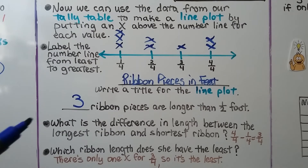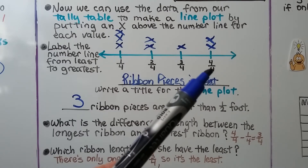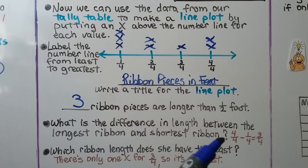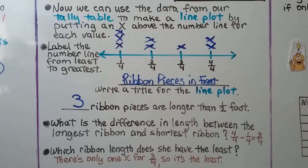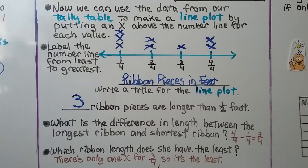What's the difference in length between the longest ribbon and the shortest ribbon? The longest ribbon is four-fourths and the shortest ribbon is one-fourth. The difference is the answer in subtraction, so four-fourths minus one-fourth. We have the same denominator, so we just subtract the numerator: four minus one equals three. The difference is three-fourths of a foot. And which ribbon length does she have the least of? Looking at the line plot, we can easily see that three-fourths is the least.